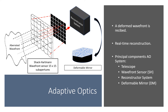Commonly, adaptive optics systems work in closed loop. It means that the first device that meets the wavefront is the deformable mirror. The mirror is then deformed according to the correction for the turbulence from the previous step. The wavefront sensor then measures the remaining aberration, since the wavefront has already been reflected by the mirror. Based on that measurement, the reconstructor calculates a new correction for the mirror.